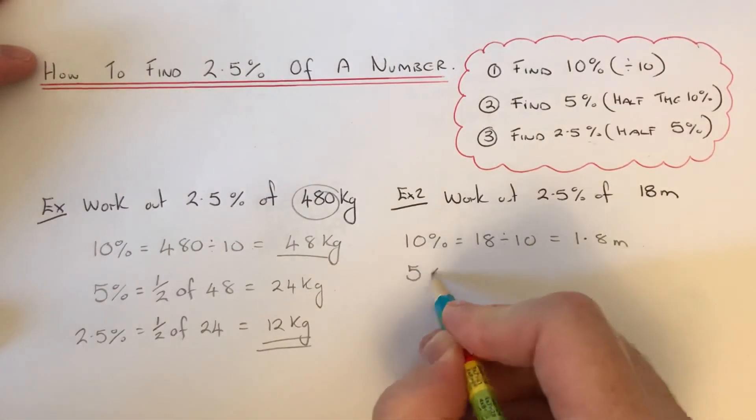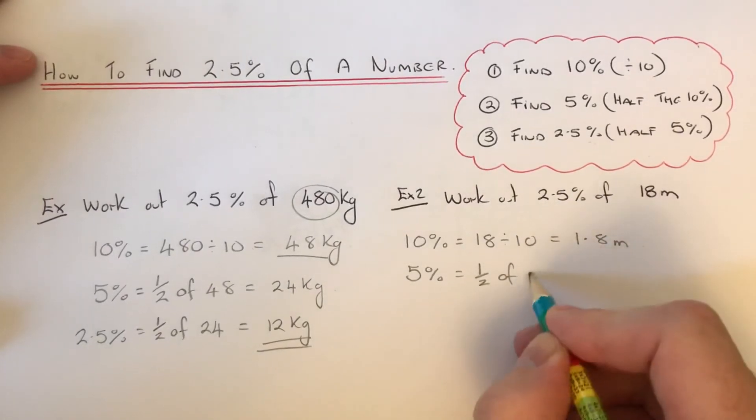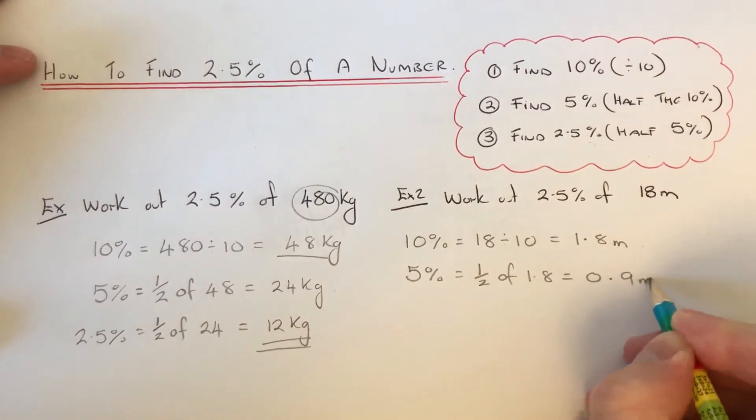Then we figure out 5%. To get 5%, you can half the 10% amount. So we do a half of 1.8, which is 0.9 meters.